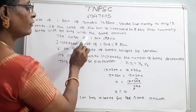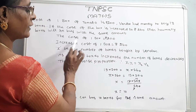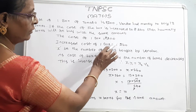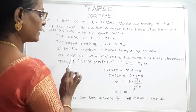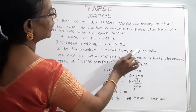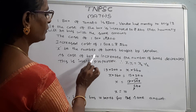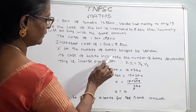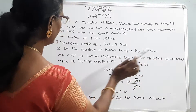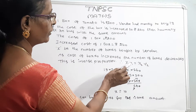The cost of 1 box is equal to Rs. 200. The increased cost of 1 box is equal to Rs. 260. Let X be the number of boxes bought by Wendan. As the cost of boxes increases, the number of boxes decreases. This is inverse proportion.